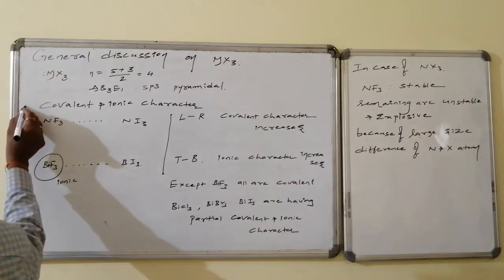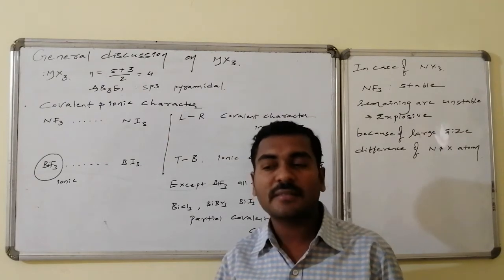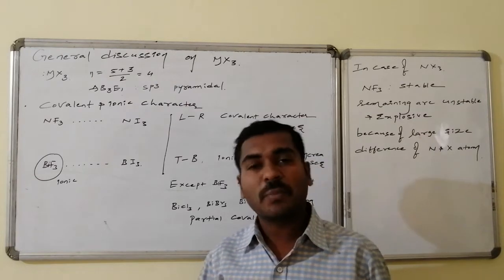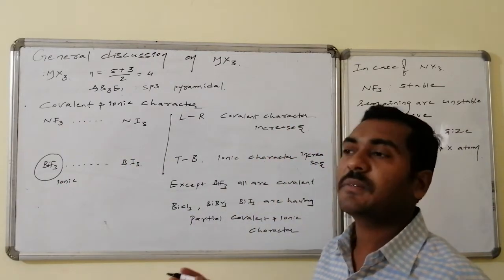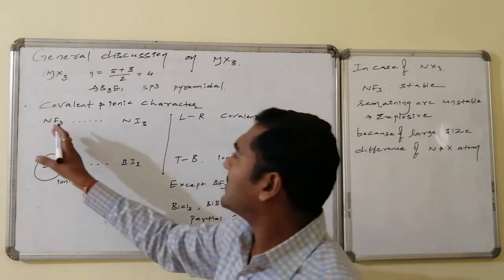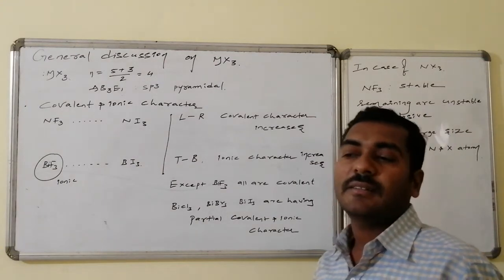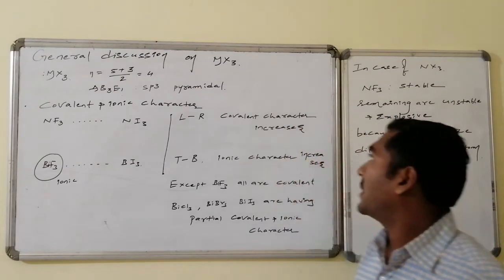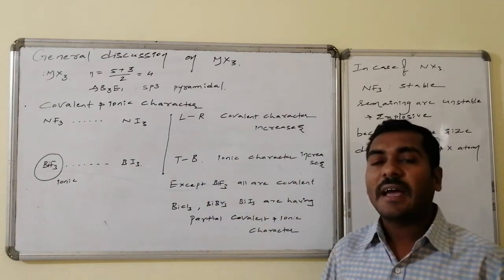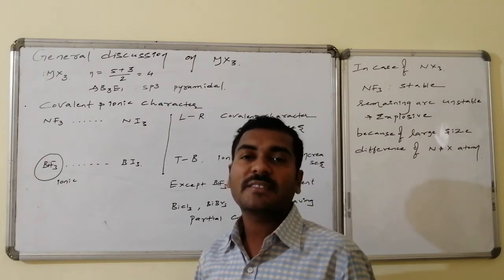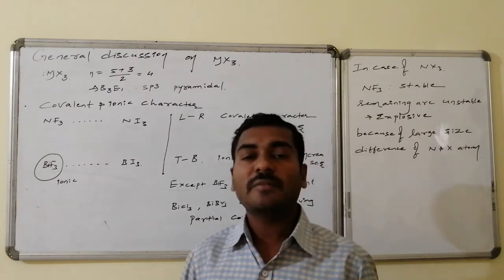The covalent and ionic character present in case of trihalides: trihalides have the central metal atom in the plus 3 oxidation state. Plus 3 is less covalent compared to plus 5. Within plus 3, we have all varieties of trihalides from nitrogen to bismuth, and all varieties of halides from fluorides to chlorides, bromides, and iodides. From left to right, in any variety of 5th group halides, covalent character increases because the size of the anion increases.